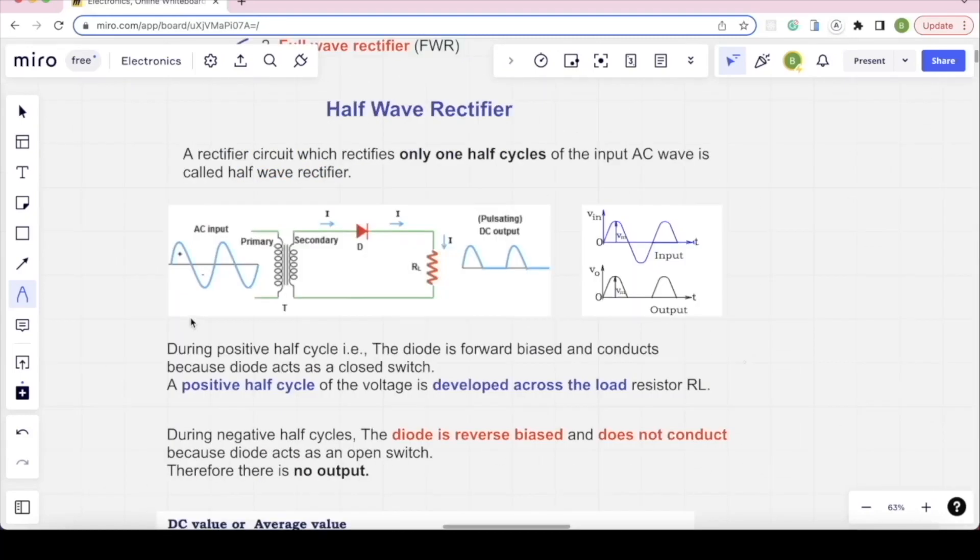Half-wave rectifier only converts one half-cycle of the AC input. When we look at this diagram, we will do AC input, but the output is only one of the half-cycle. First, for the positive half-cycle of the AC input, diode forward bias, so it conducts. Now it will act as a closed switch, so output will appear. But for the negative half-cycle of the AC input, there will be no output waveform. Only positive half-cycle of the AC output.